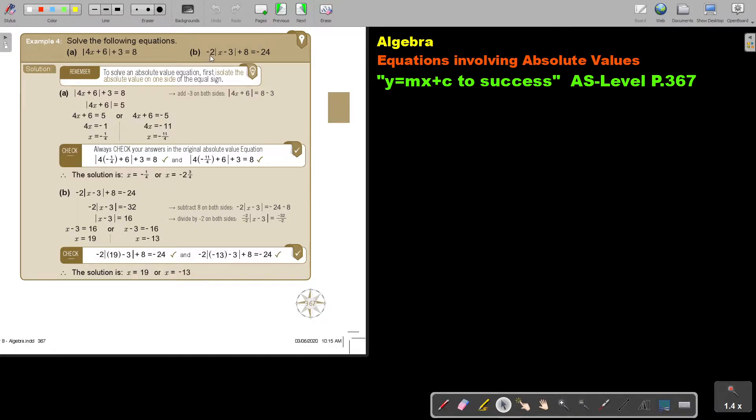And now this one, the same here. First take the positive 8 over. And now if it's positive 8, then it becomes negative. And then don't forget, divide by negative 2, divide by negative 2. And now you can take the positive option and the negative. And again, you can check your solutions.